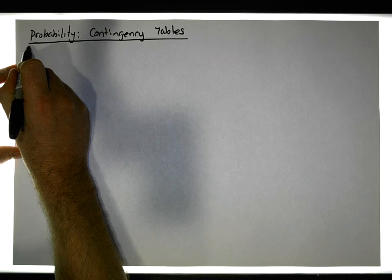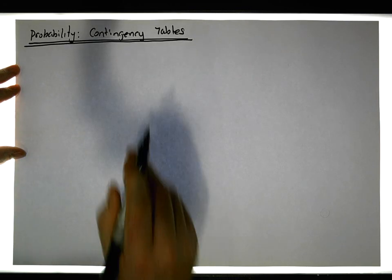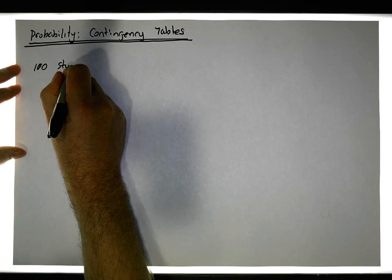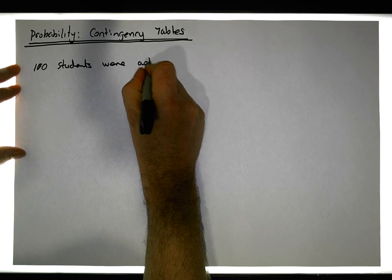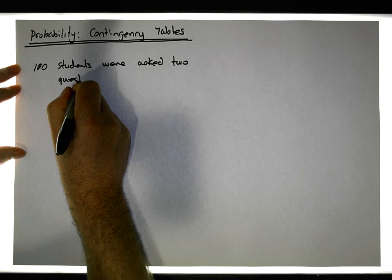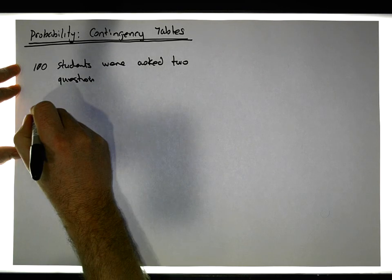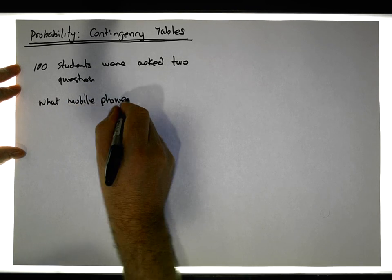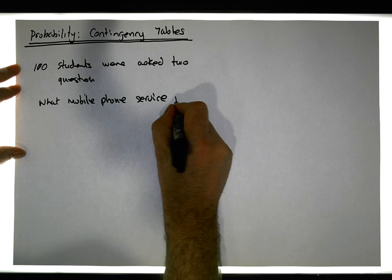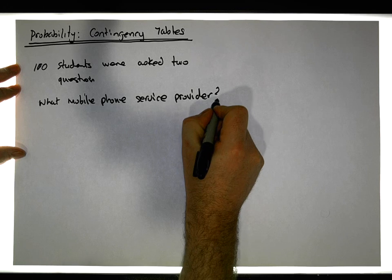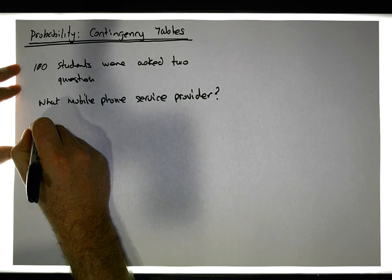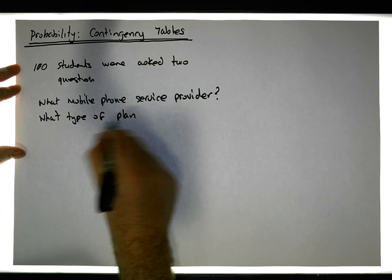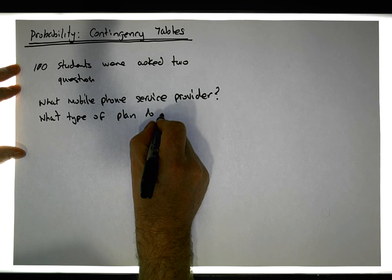What we're going to concentrate on today is contingency tables and probabilities calculated from those tables. As an example, let's consider 100 students who were asked two questions. The first question is: what mobile phone service provider do they have? And the second question is: what type of payment plan do you have?